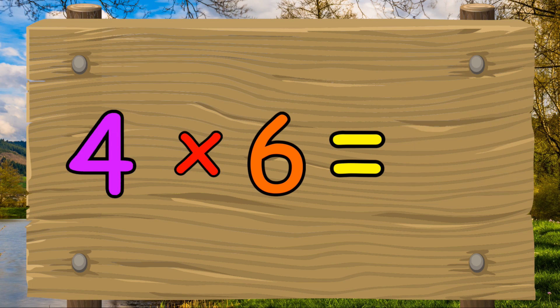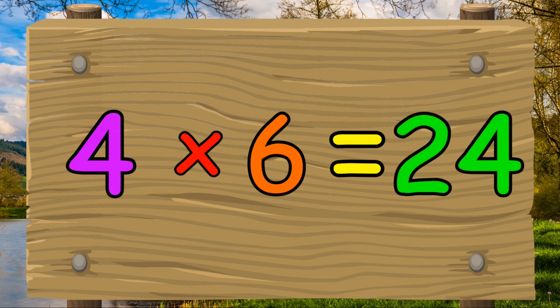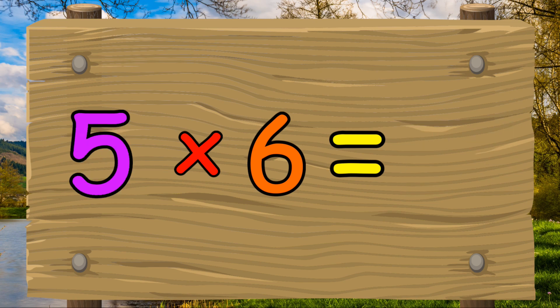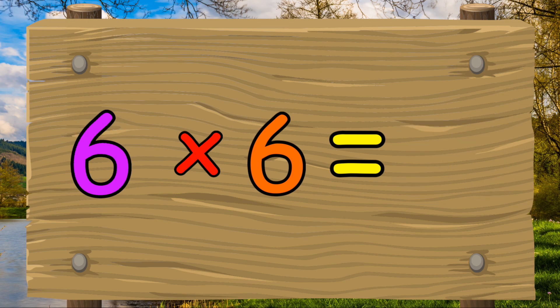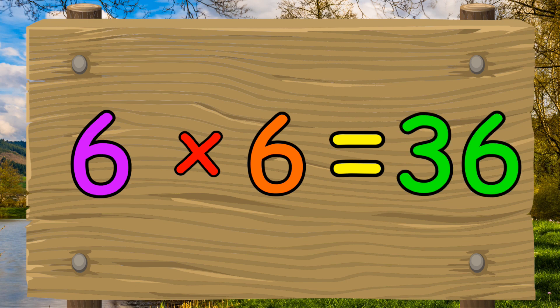Four times six equals twenty-four. Five times six equals thirty. Six times six equals thirty-six.